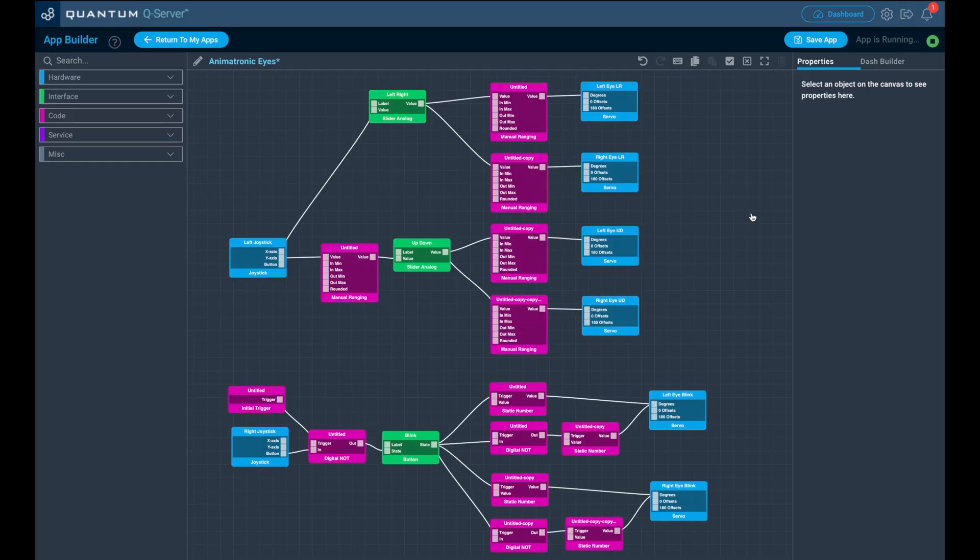Now let's have a look at the app to control the eyes. We've got two joystick inputs on the left, one for the left stick and one for the right stick. The left stick will control the eye movement and the button on the right stick will control the blinking. These feed into the controls in our web dashboard so that we can control the eyes from the dashboard as well. We have two analog sliders, one for the left and right movement and one for the up and down movement and then a button to blink.